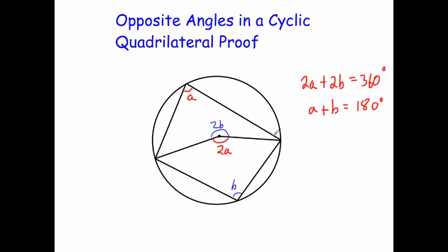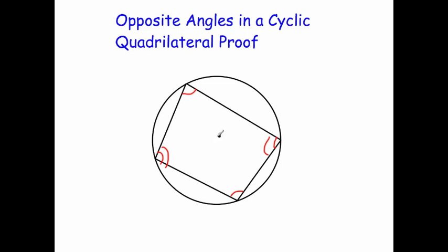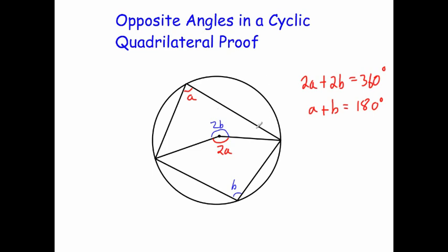This proof could also be done for this angle and this angle by drawing the line from here to there and likewise there, and again you would find the same thing. So that's the proof to why the opposite angles in a cyclic quadrilateral will add up to 180 degrees.